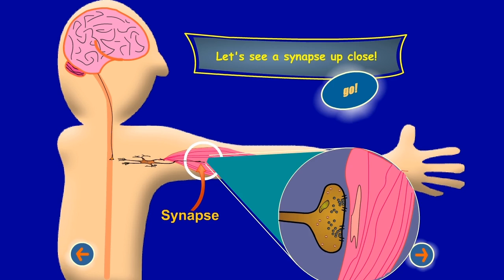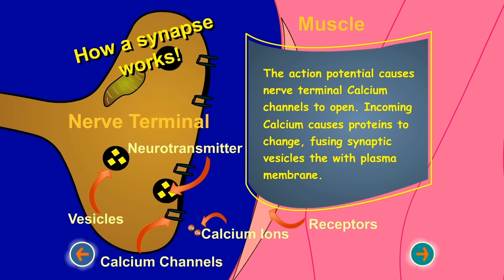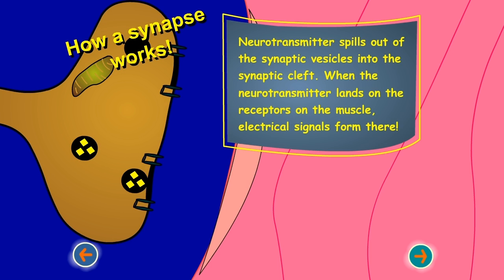Let's see a synapse up close. The action potential causes nerve terminal calcium channels to open. Incoming calcium causes proteins to change, fusing synaptic vesicles with the plasma membrane. Neurotransmitter spills out of the synaptic vesicles into the synaptic cleft. When the neurotransmitter lands on the receptors on the muscle, electrical signals form there.